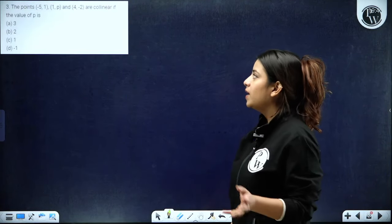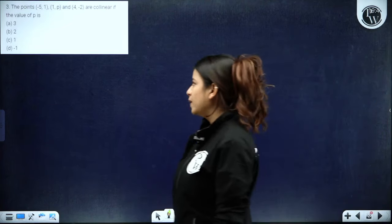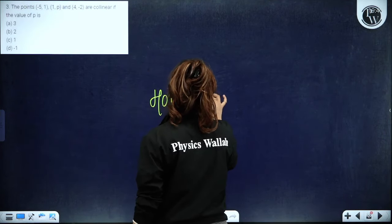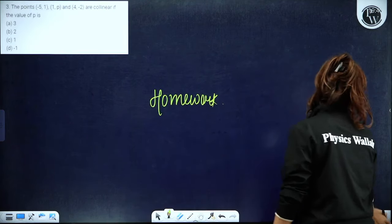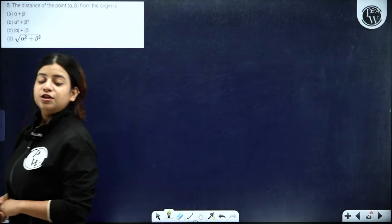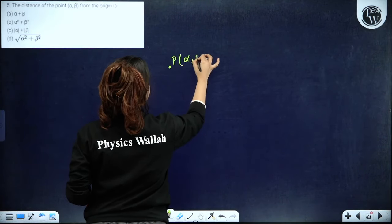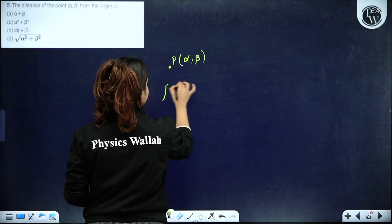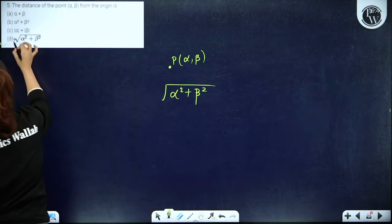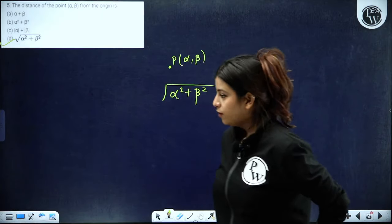The next question about collinearity (points −5,1 and 1,p and 4,−2) is from a deleted topic, so no need to solve it. For the distance of point (α, β) from the origin: using the formula, it is √(α² + β²). Option D is the correct answer.